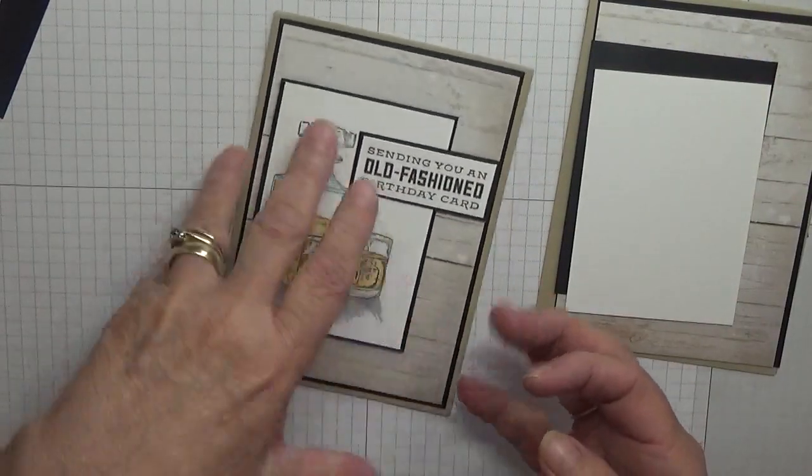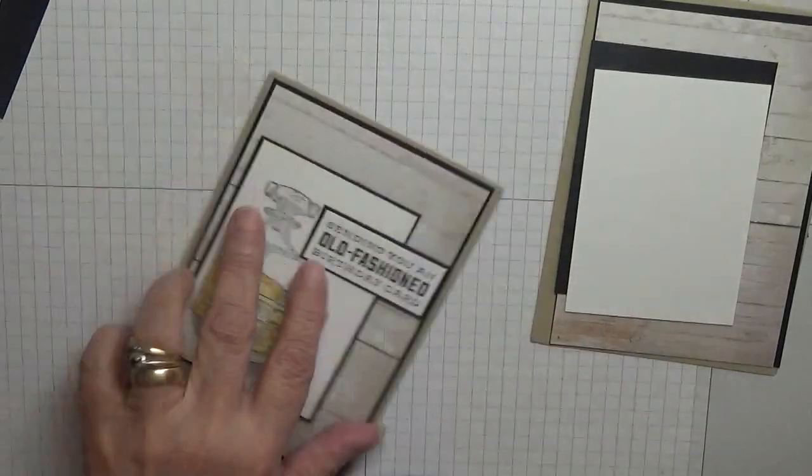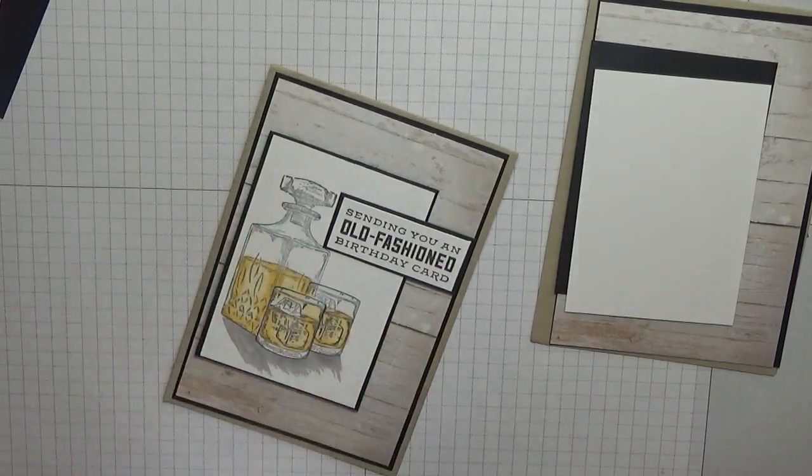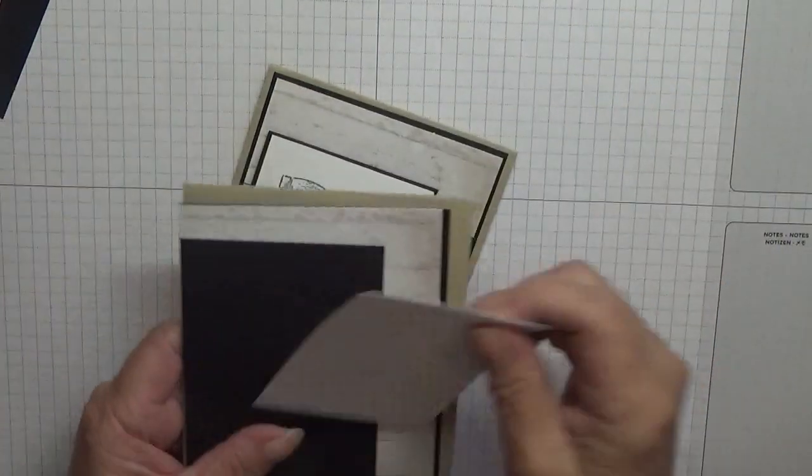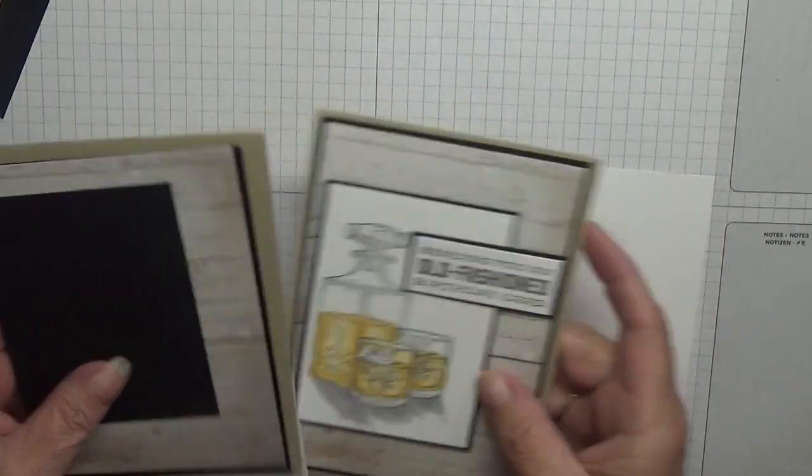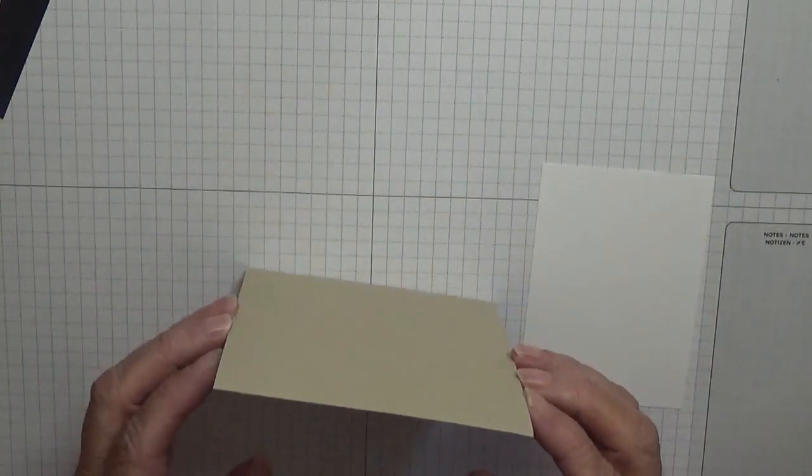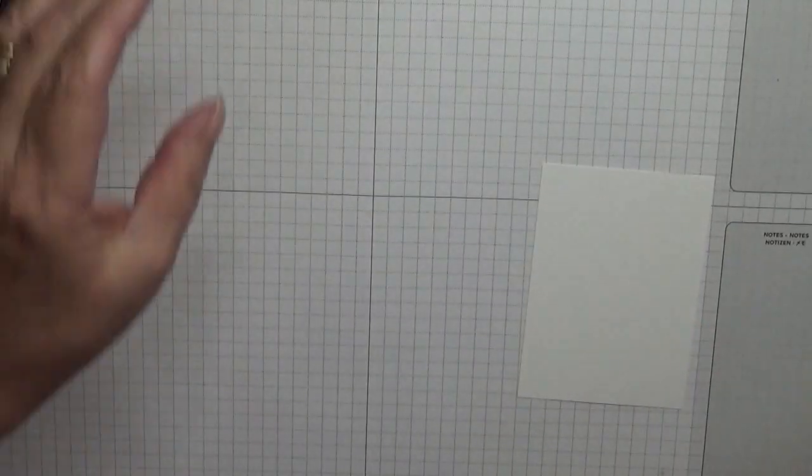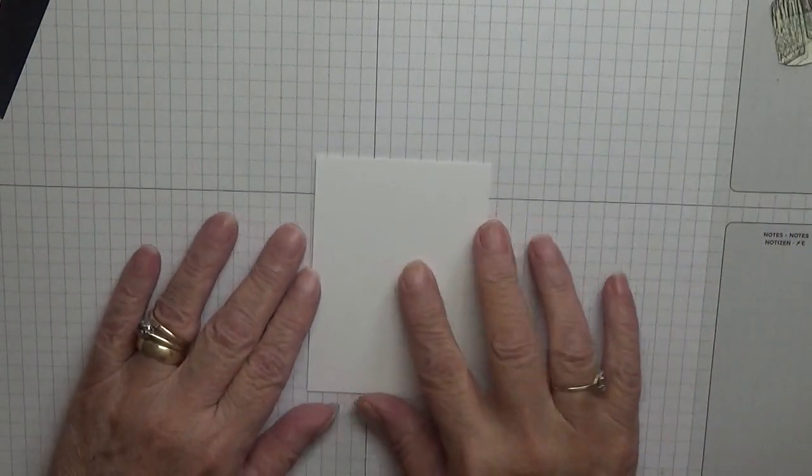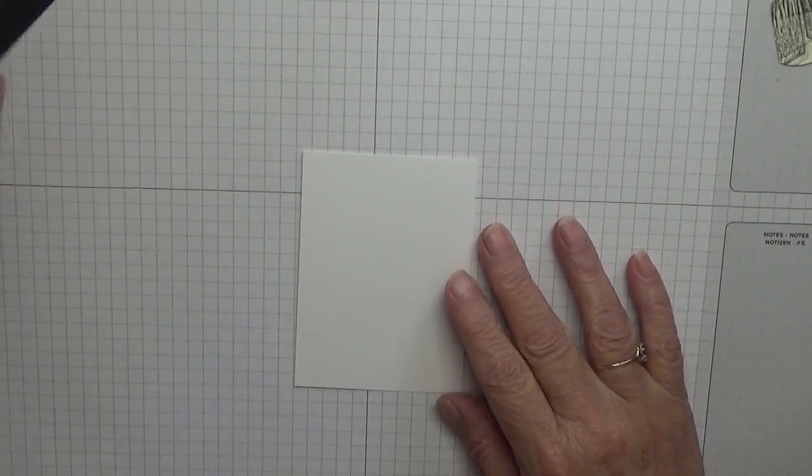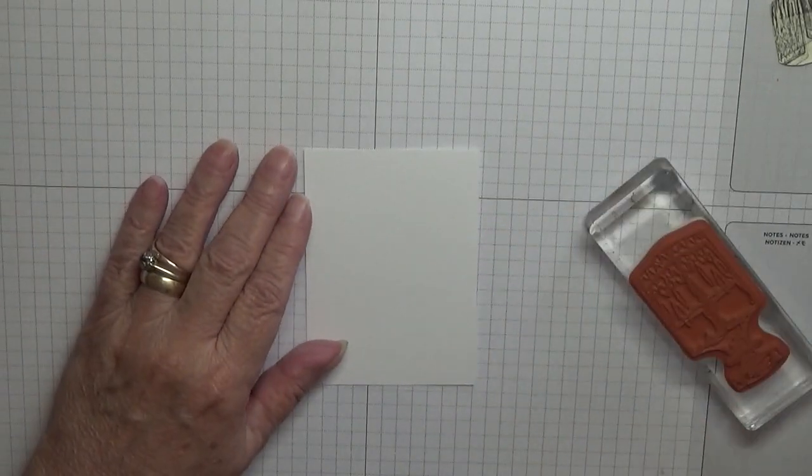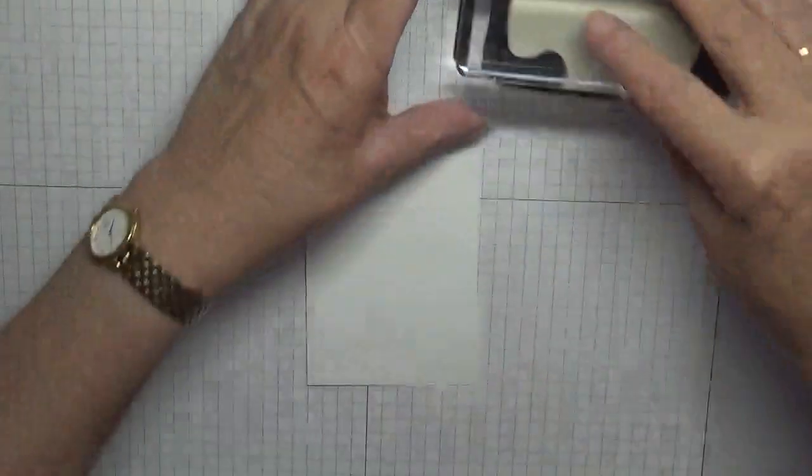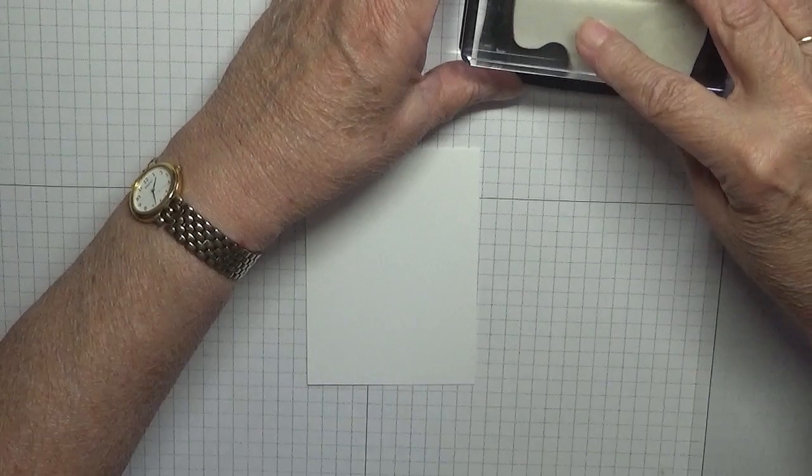I need a piece of white card for the inside. I've also got a mask for the glass, which is here. So we will stamp first. I'm using Memento black ink.